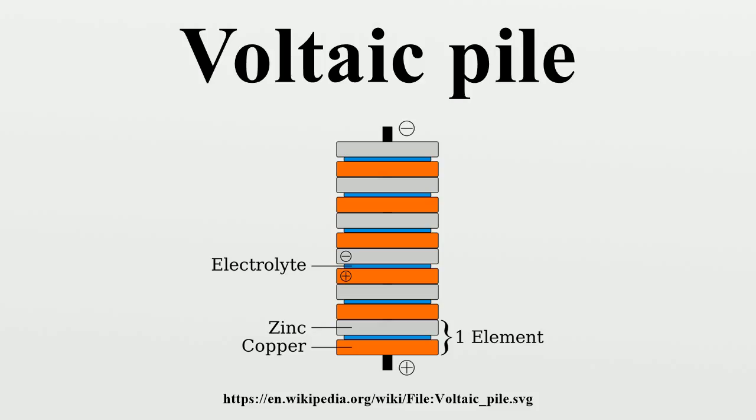On 20 March 1800, Volta wrote to the London Royal Society to describe the technique for producing electric current using his device. On learning of the Voltaic Pile, William Nicholson and Anthony Carlyle used it to discover the electrolysis of water.